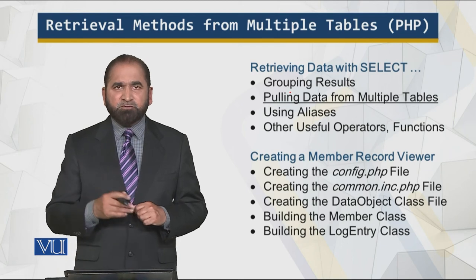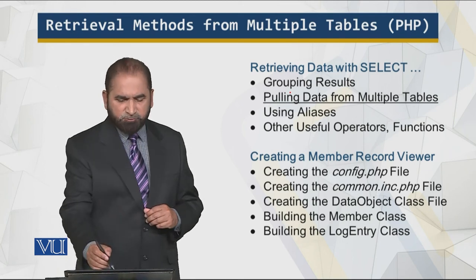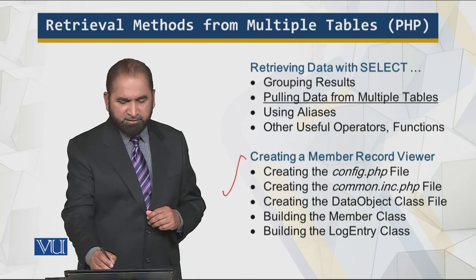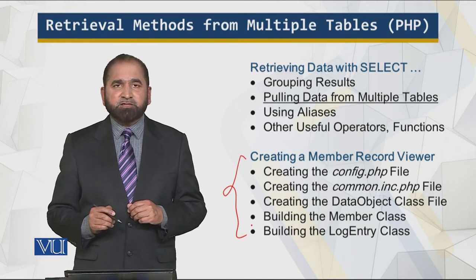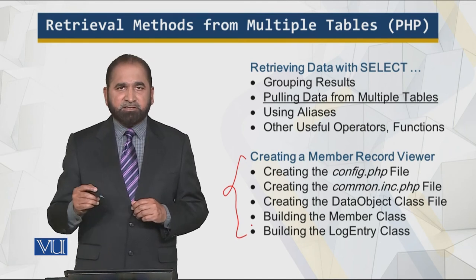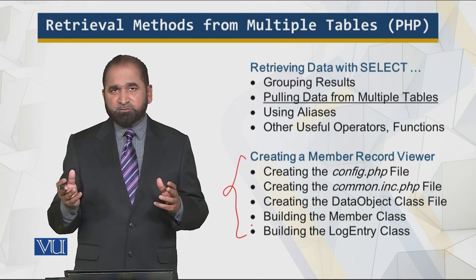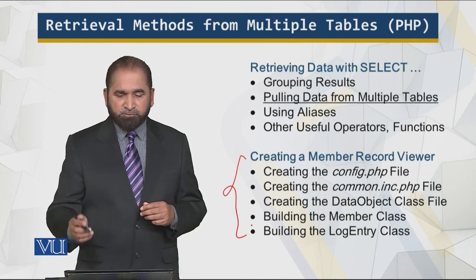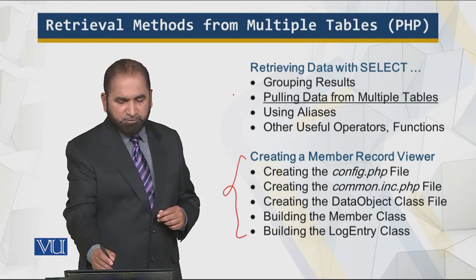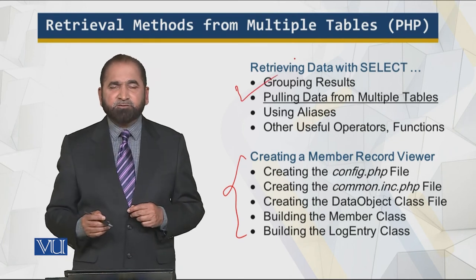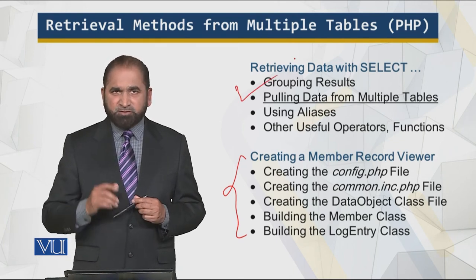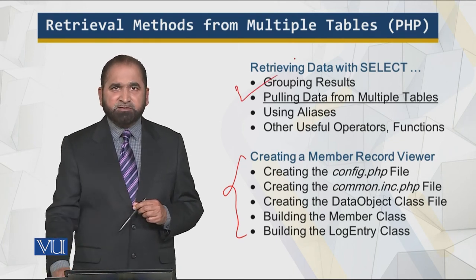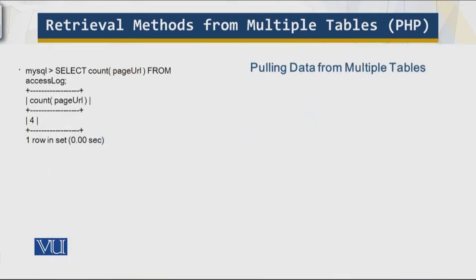This is what I will be covering. There is a very interesting part where we will create forms for a fictitious bookstore, which I will talk about. Right now, I will be talking about some details about pulling data from multiple tables. Let's look at some examples and some code.